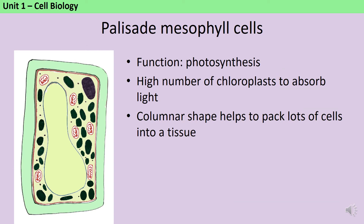Our first specialised plant cell looks quite similar to the generic plant cell that you would draw if you were comparing animals and plants. This is a palisade mesophyll cell, and it's found quite near to the top of the leaf. Its function is photosynthesis — these are the cells in the leaf that do the majority of absorbing the light in order for plants to be able to make their own food. As a result, they need a high number of chloroplasts, because it's the chlorophyll in the chloroplasts that will actually absorb the light. Also, they have quite a tall, thin, rectangular shape, which means that it's possible to pack lots of cells into the same tissue, and there's quite a good chance that by the time light has made it through the whole cell, it will have hit one of those chloroplasts along the way.